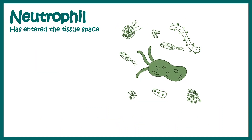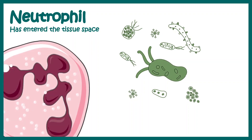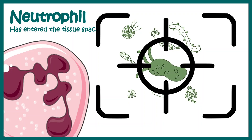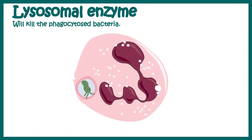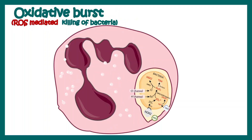Once in the tissue space, neutrophils can see the bacteria and their goal is to kill them. Neutrophils chase the bacteria, engulf them, and phagocytose them. After phagocytosis, there is lysosomal fusion and lysosomal enzymes degrade the bacteria. Alternatively, neutrophils have an elaborate mechanism to generate reactive oxygen species (ROS) inside the cell, which can kill and damage the membrane of bacteria or other pathogens, thereby eliminating them.